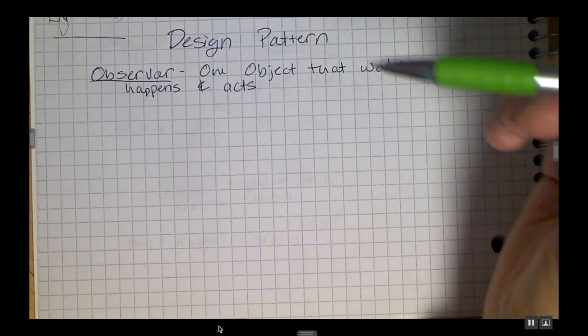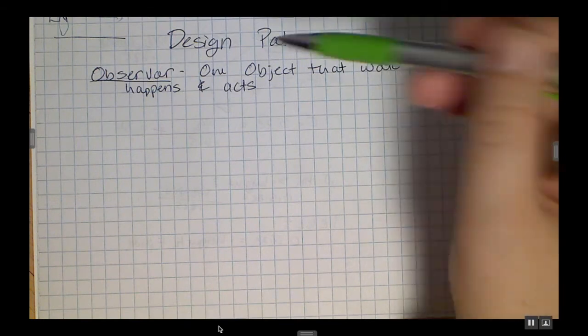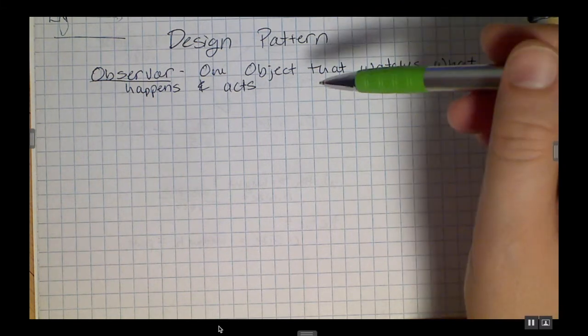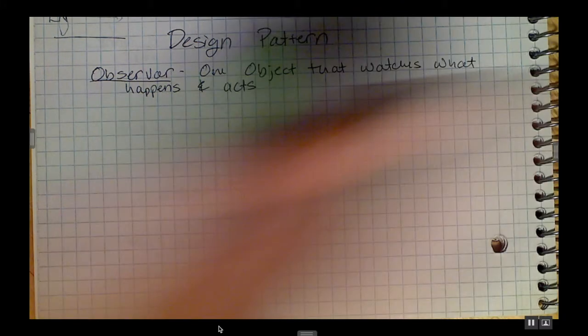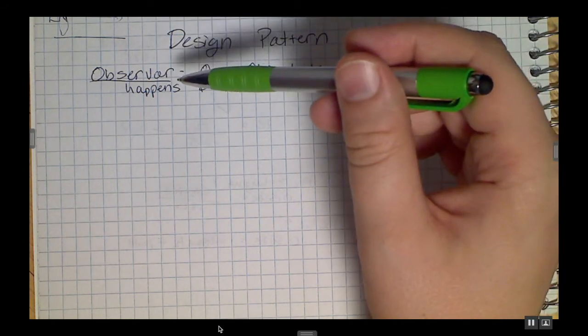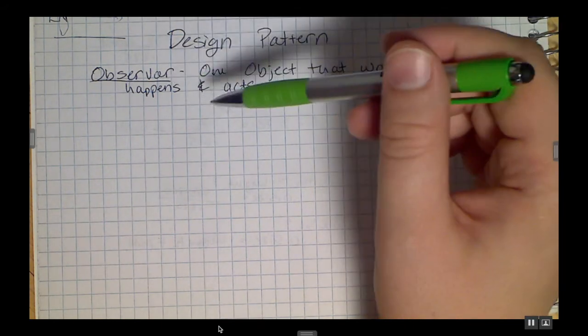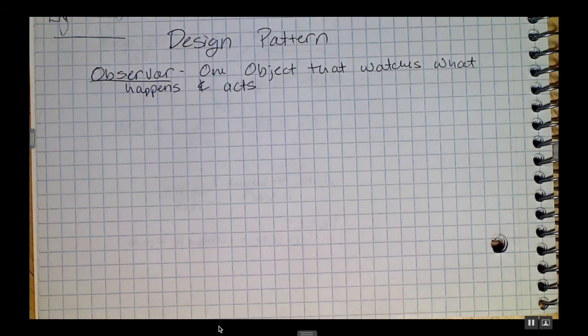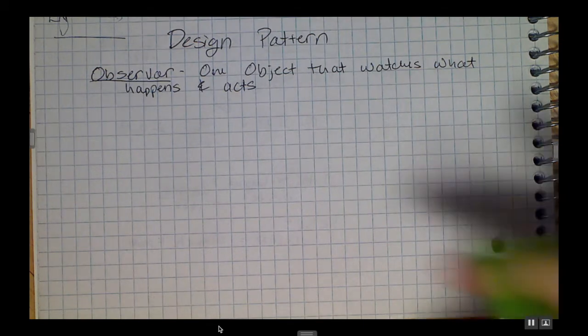A lot of times people use the observer pattern for things like game managers, which manage how many lives you have, what stage you're on, what checkpoint in the level is currently active, and so on. They can also use an observer pattern for things like a health manager for either the player or enemies. In general, this is pretty helpful.